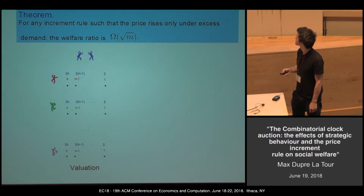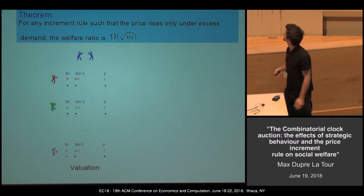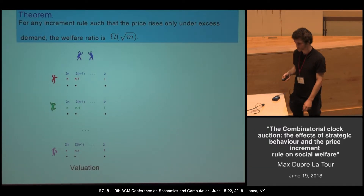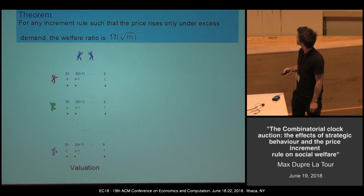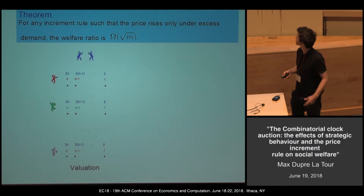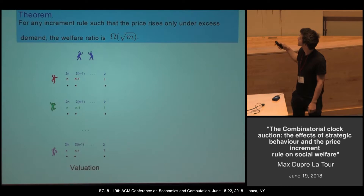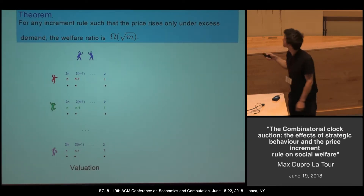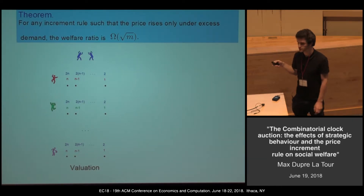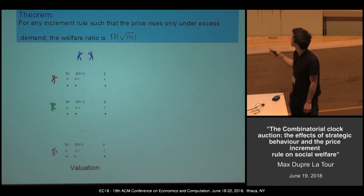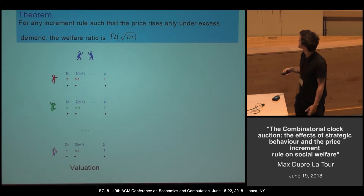Here we have N² items and N plus two bidders. We have one bidder per row — they value only the items of their row. The red bidder only cares about items in the first row: they value N for the first item, N minus one for the second, and so on. The two blue bidders have positive value for all items: they value 2N for items in the first column, 2N minus one for the second column, and so on.